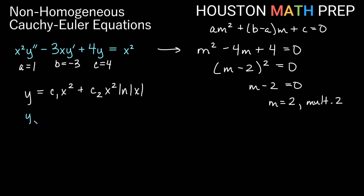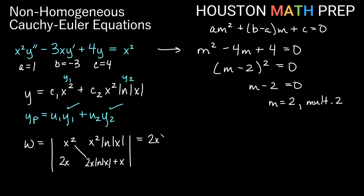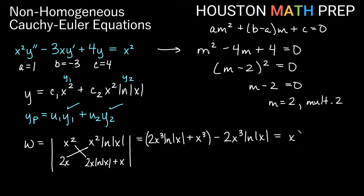We need to find yp equals u1 y1 plus u2 y2, where y1 equals x squared and y2 equals x squared ln x. For the Wronskian W, we set up the determinant with x squared and x squared ln x in the first row, and their derivatives 2x and (2x ln x plus x) in the second row. The first diagonal gives 2x cubed ln x plus x cubed; subtracting the second diagonal 2x cubed ln x leaves us with W equals x cubed.